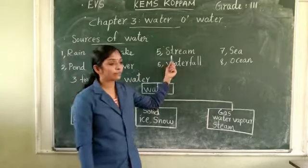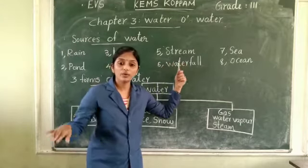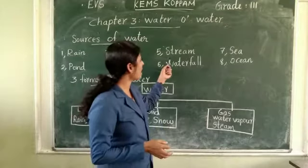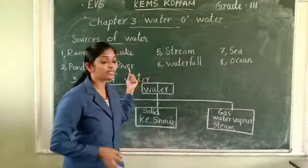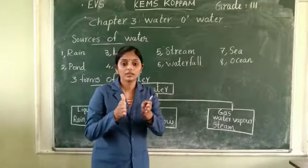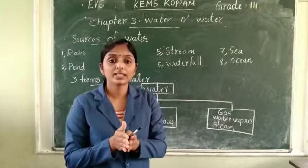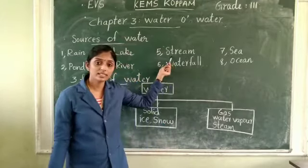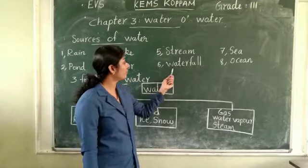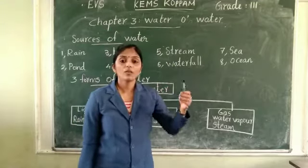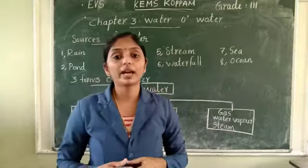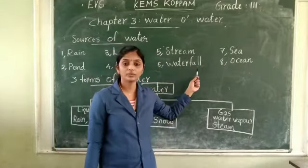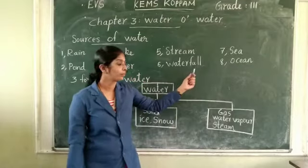Next is a stream. A stream is also a flowing water body, but it is narrower than a river. Next is a waterfall — water falling from a height. That type of water body is called a waterfall.